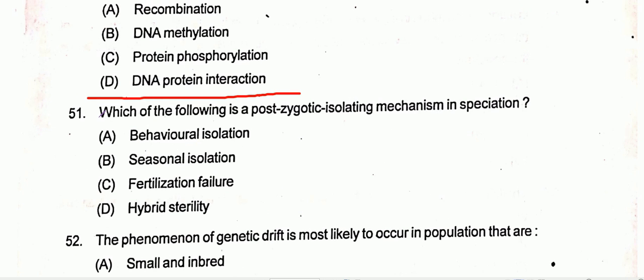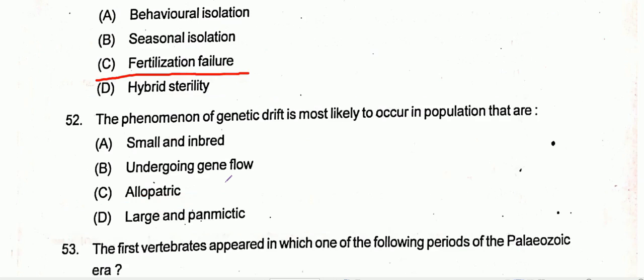Question number 51: Which of the following is a post-zygotic isolation mechanism in speciation? Option C is the correct one, that is fertilization failure.